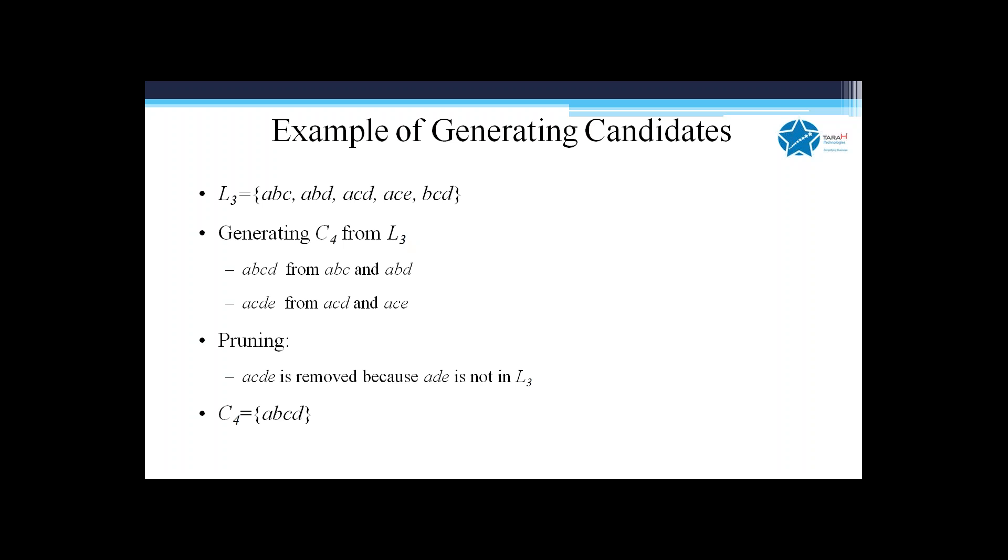All subsets need to satisfy the condition. We're checking whether all subsets of the K itemset satisfy the K minus one level itemset property.